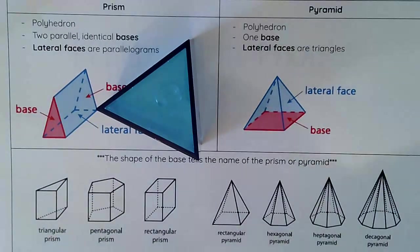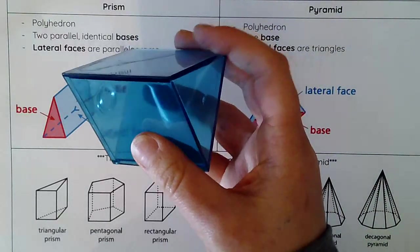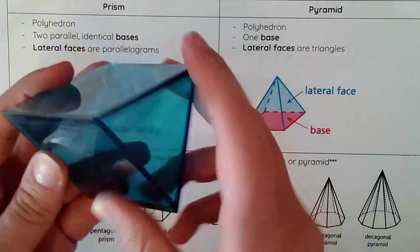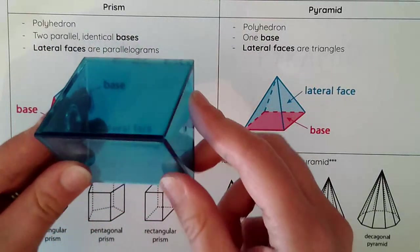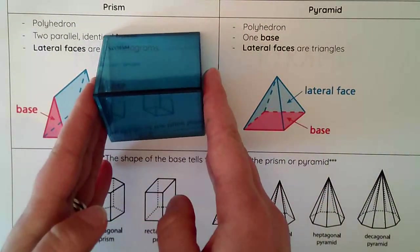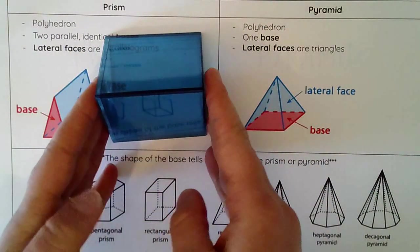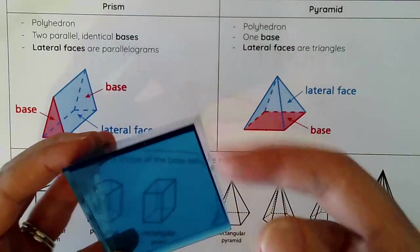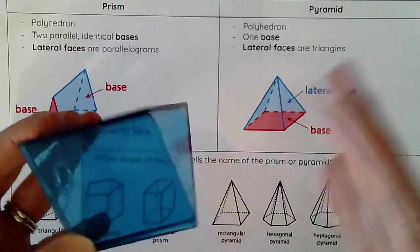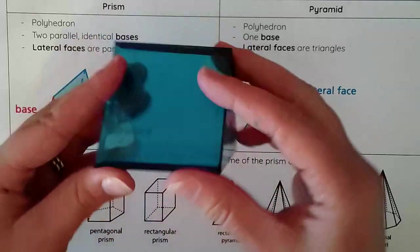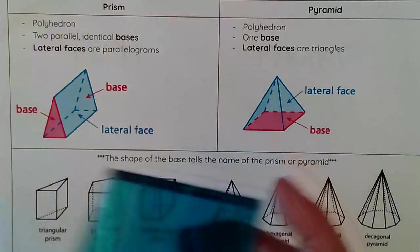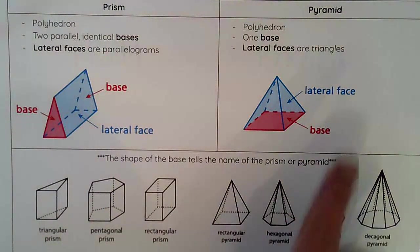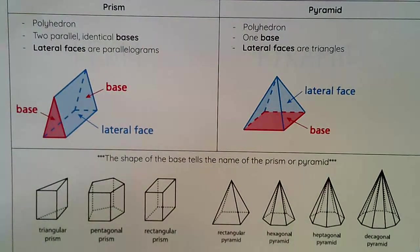I have a 3D example here. Looking at this figure, if I turn it, I can see that there are two bases that are identical to each other and parallel. I can also see that my lateral faces — the faces that connect my bases — are rectangles. So this is a prism.